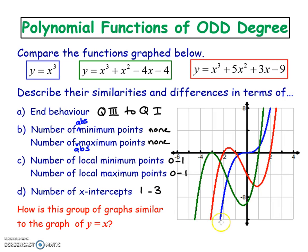Absolute max and mins - none of these have an absolute minimum because they go on forever this way, and they don't have an absolute maximum because they go on forever that way. So it should be none and none.